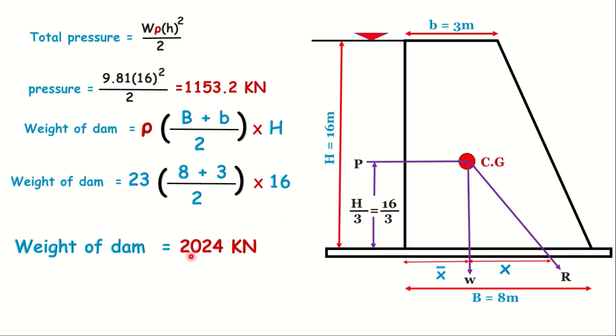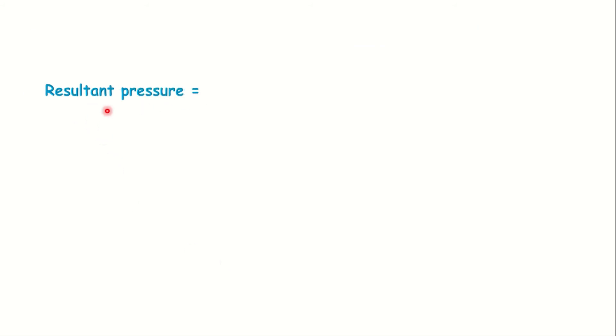Resultant pressure = √(P² + W²) = √((1153.2)² + (2024)²) = 2329.47 kN.